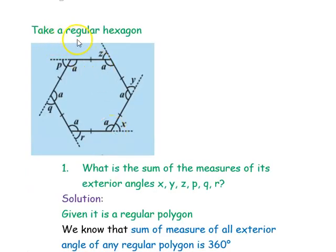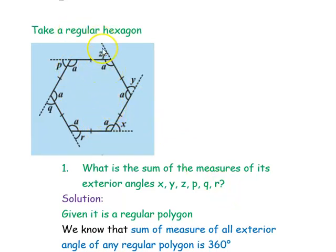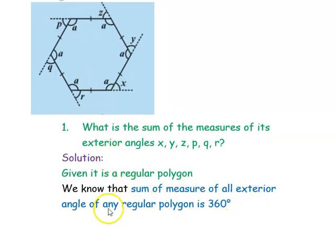The next question is: take a regular hexagon. The given figure is a regular hexagon. The word 'regular' indicates all the sides are equal and all the interior angles are equal. They have marked the six interior angles as a, a, a, a, a, a — so all six interior angles are equal. You know that the sum of all exterior angles of any regular polygon is 360 degrees.